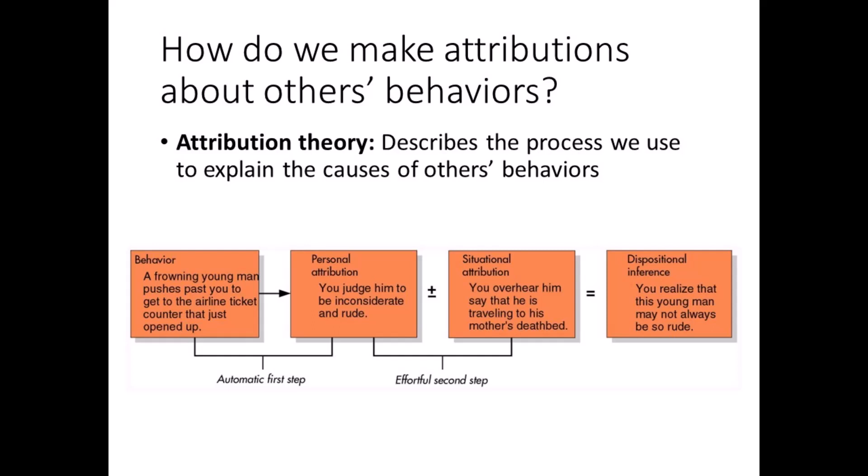Attribution theory describes the attribution process and is illustrated here in the figure. Let's review the example. Imagine a frowning young man pushes past you at the airport ticket counter that just opened up. Initially, without much thought, you make a personal attribution — you attribute this behavior to the person. You judge him to be inconsiderate and rude.